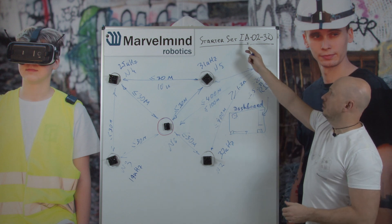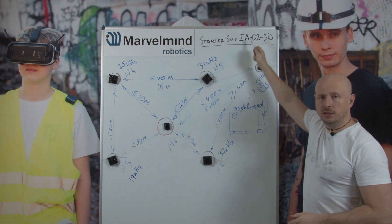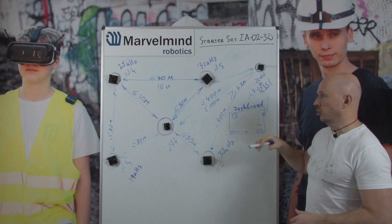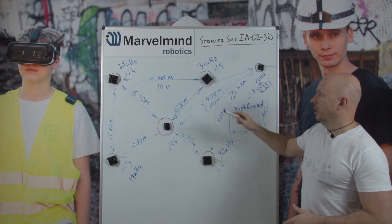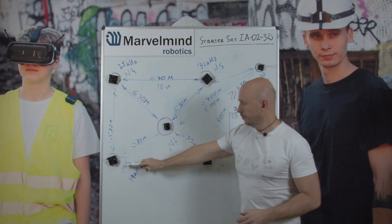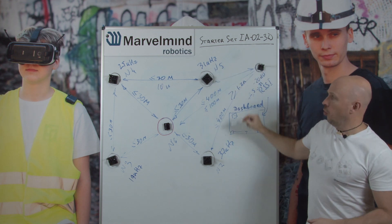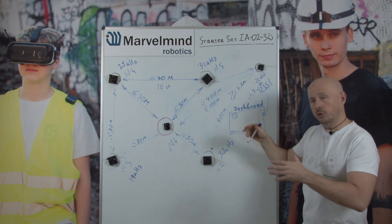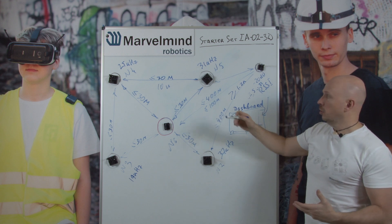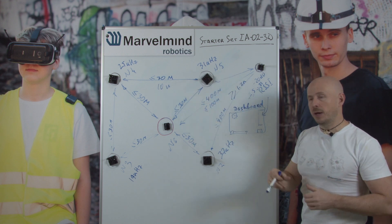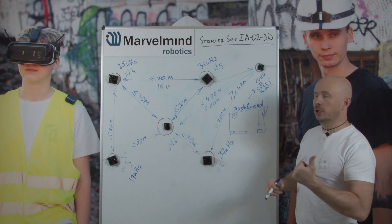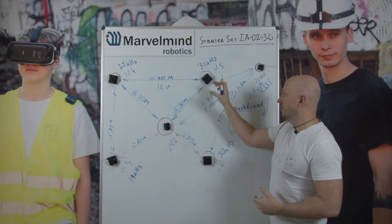Hello colleagues. Today we'll be talking about Starter Set ER02-3D. The most important element of an inverse architecture to remember — and to make it work well — is that each of the stationary beacons must have different ultrasonic frequencies. In non-inverse architecture, all beacons work on the same ultrasonic frequency, usually 31 kHz. In inverse architecture it's the opposite: each beacon, at least within one submap, must have a different ultrasonic frequency.